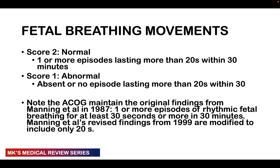The next parameter is fetal breathing. A score of 2 (normal) is given if there is one or more episode lasting more than 20 seconds within 30 minutes of the test. A score of 1 (abnormal) is given if there are no breathing movements or no episode lasting more than 20 seconds within 30 minutes. According to the American College of Obstetrics and Gynecology, based on the original findings first described by Manning and colleagues in 1987 and revised in the 1990s, the threshold is 20 seconds rather than the originally stated 30 seconds.